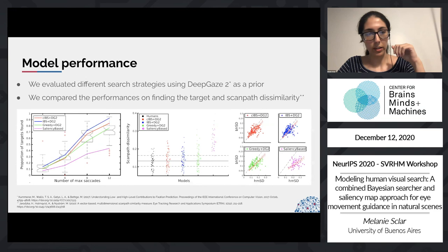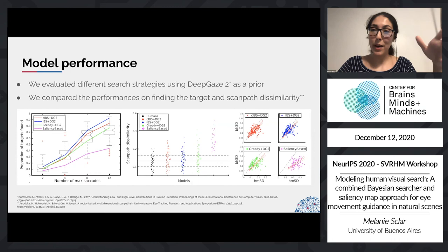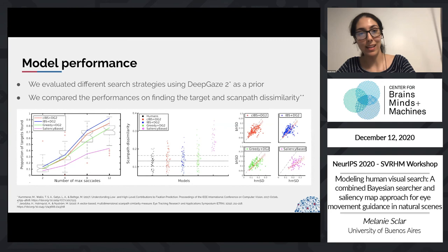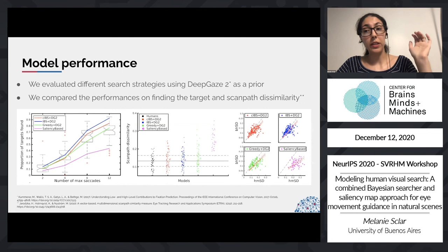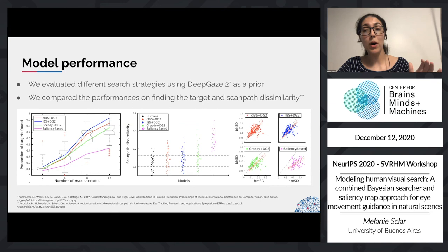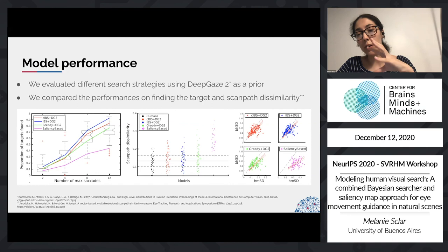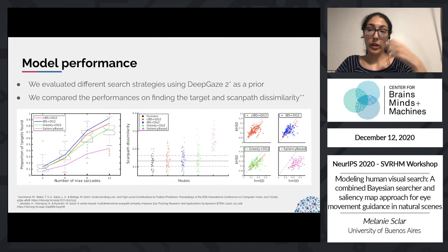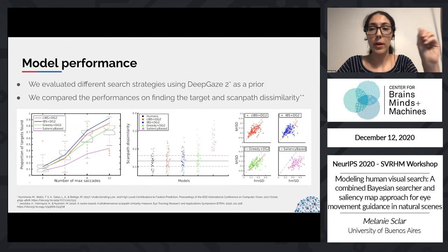We also compared CIBS to IBS, a greedy model, and a saliency-based model that simply looks at the most salient location each time with inhibition of return. Using the same metrics with DeepGaze 2 as prior, the greedy and saliency-based models differ greatly from humans, while CIBS and IBS both perform very well. Looking across all metrics, CIBS performs slightly better, but both are excellent.